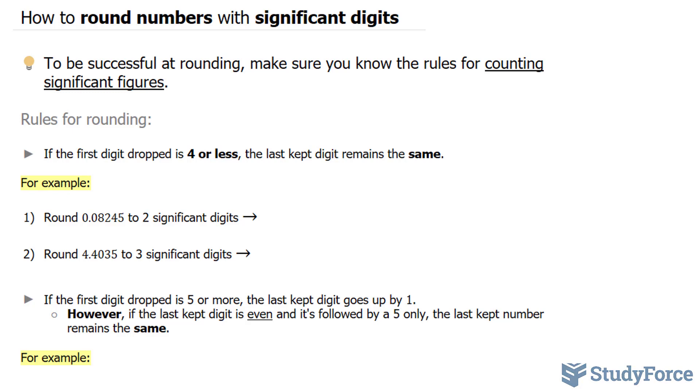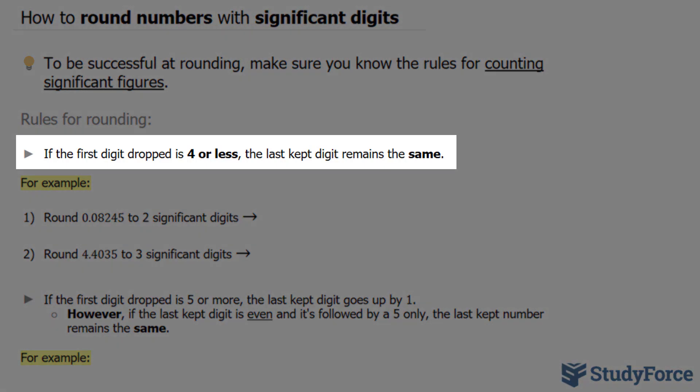Let's discuss the first rule to rounding. If the first digit dropped is 4 or less, the last kept digit must remain the same.